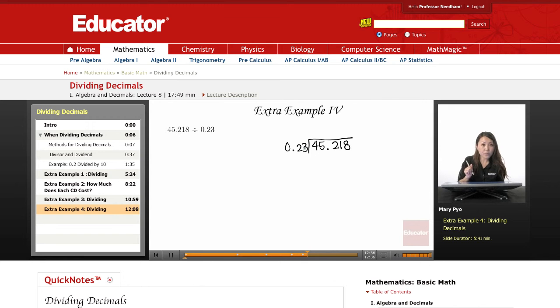So remember, the first rule in dividing decimals is to make sure that this number, my divisor, is a whole number. Now it's not a whole number because there's numbers behind the decimal point, right? So I'm going to count to see how many numbers I have behind the decimal point, and it's two.